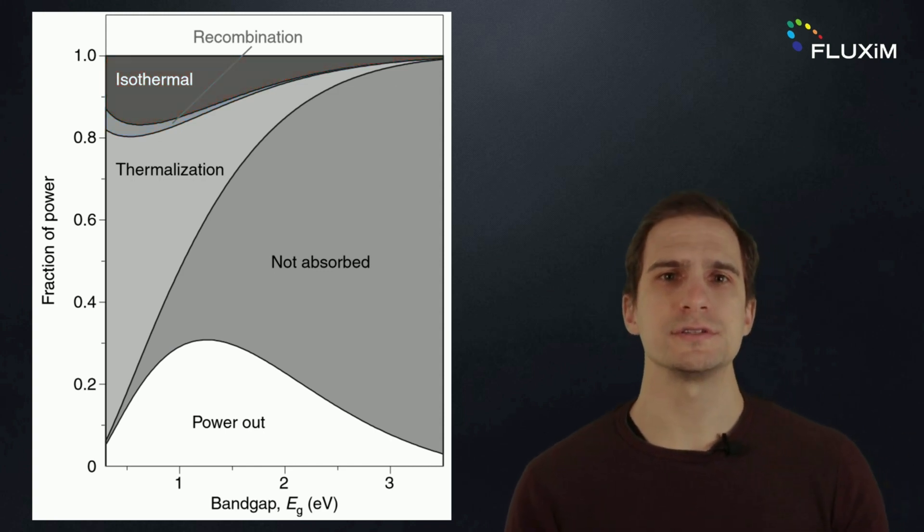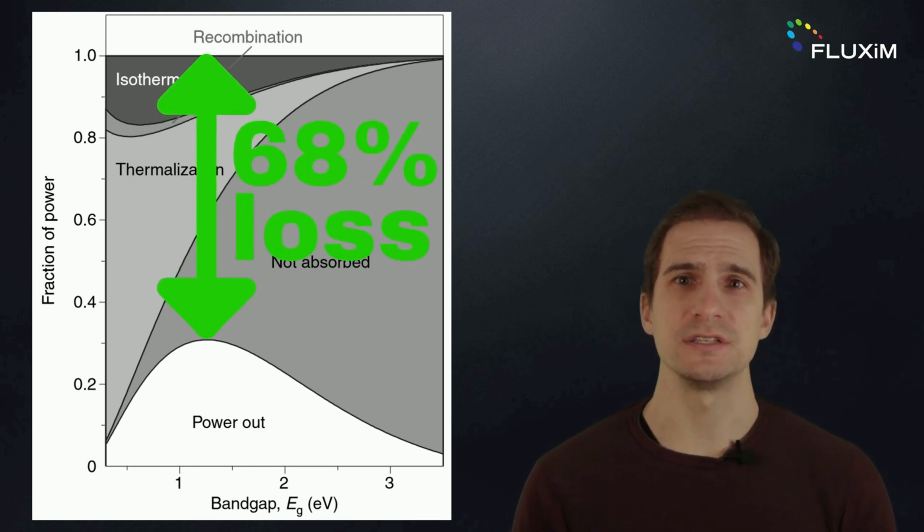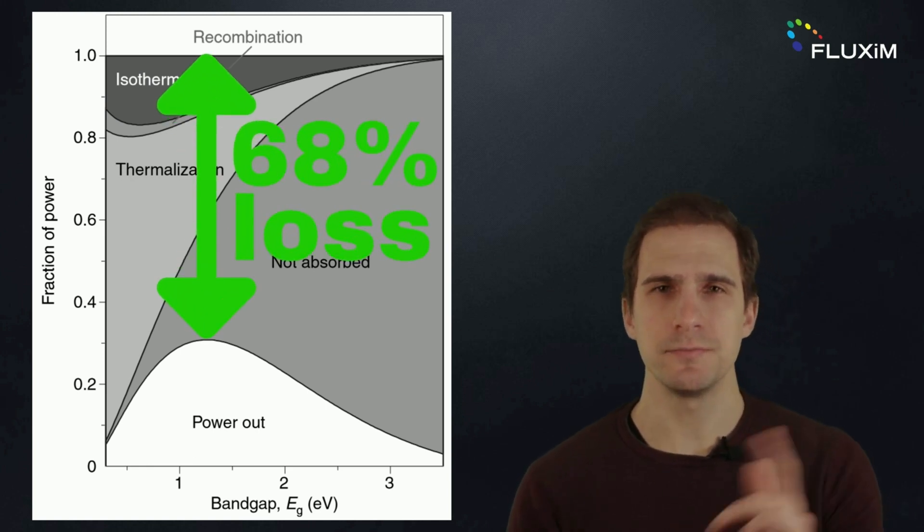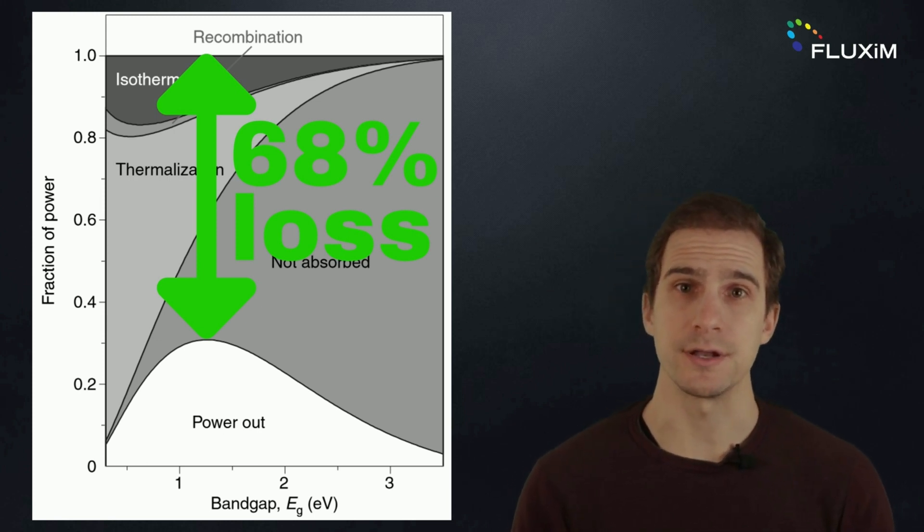Overall, these losses result in about 68% of the total sunlight not being converted into electricity. The efficiency of commercial silicon solar panels is limited to around 20% by parasitic losses caused by the large area.